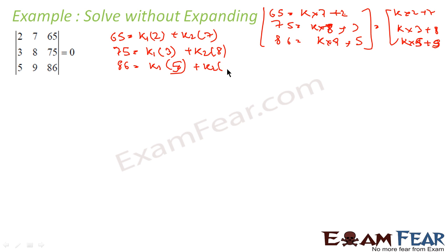If we break it this way, we get two determinants. The first determinant will be 0 because the column with 2, 3, 5 is proportional to the other column with 2, 3, 5. The second determinant will also be 0 because the column 7, 8, 9 will be proportional to the k2 multiple column.